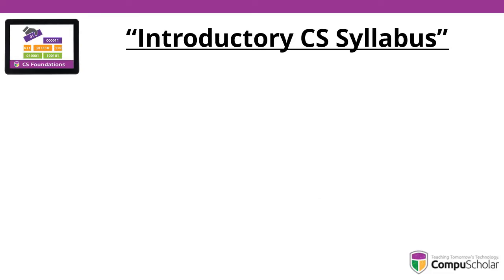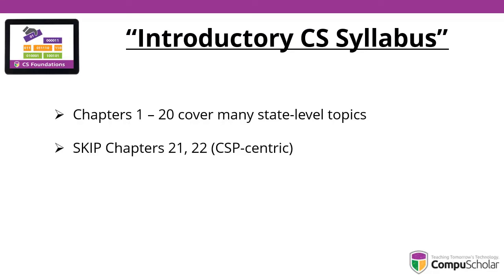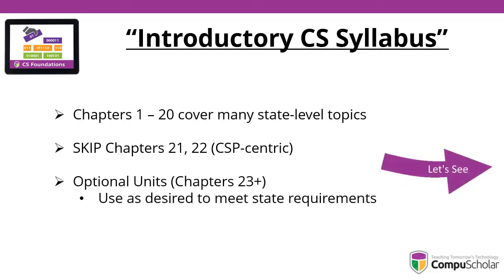Many districts would like to use this title for introductory computer science as well. States define very similar state standards, so you'll basically go through Chapters 1 to 20 to cover those same state-level topics. There might be a few things you can skip based on your particular state's needs. You'll skip Chapters 21 and 22, which are for CSP students only, and make more heavy use of Chapters 23 onward to meet specific state requirements.